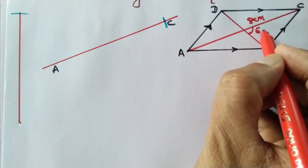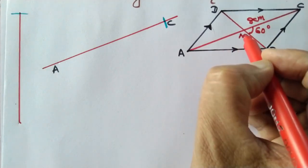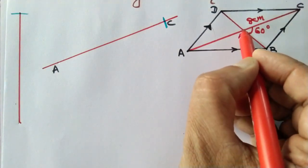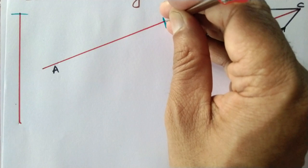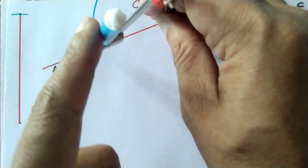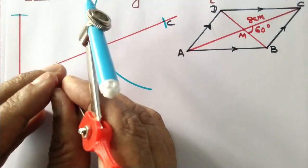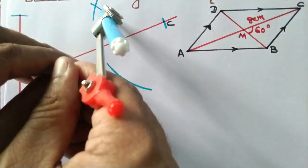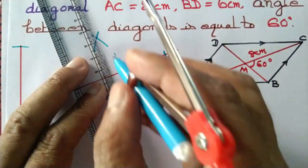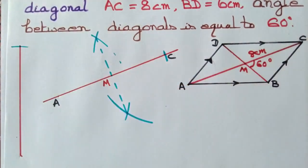Next, we need to find the midpoint M of the two diagonals. Since the diagonals of a parallelogram bisect each other, we find the midpoint M of AC by drawing a perpendicular bisector. To do so, we draw two arcs — one above and one below AC — from point C, then again from point A. Those two arcs intersect, and we join the intersection points to obtain midpoint M.